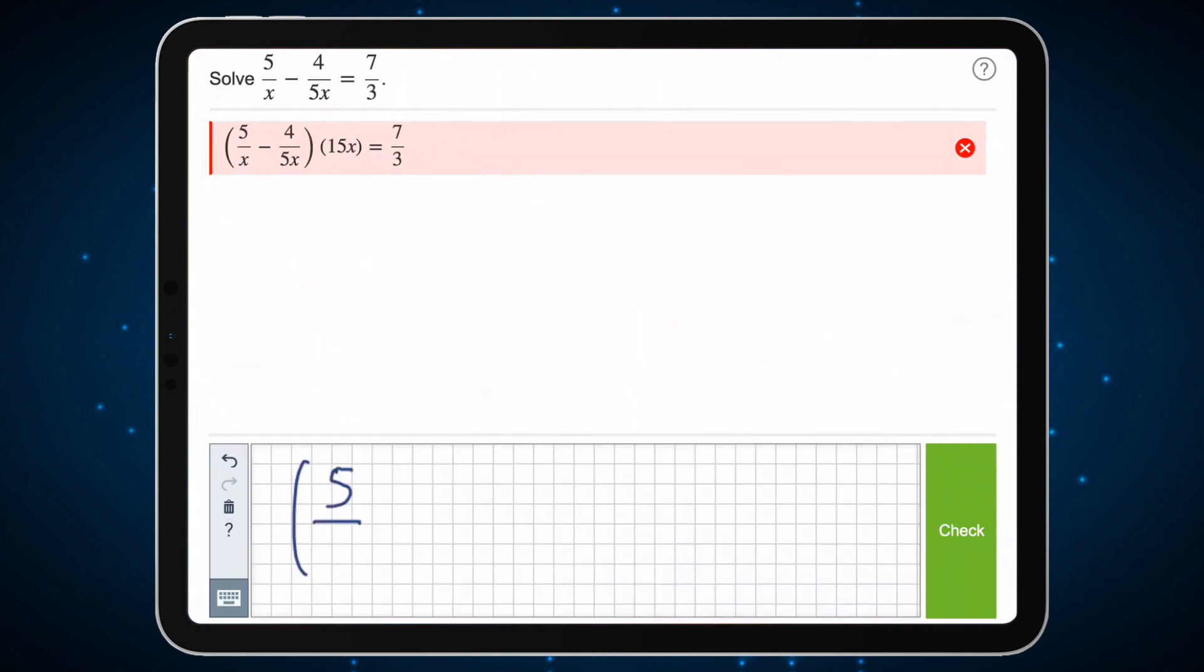The equation can be input using the handwriting recognition feature too. If a blue tick appears, it shows that it is an intermediate working step.